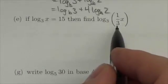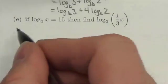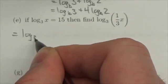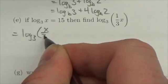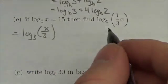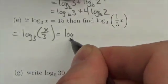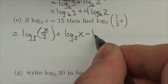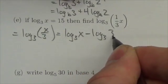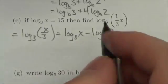Now remember, 1/3 of x is basically x over 3. So when I have the log base 3 of x over 3, which is what that is (1/3 of x), this is the log base 3 of x minus the log base 3 of 3. Division becomes subtraction.